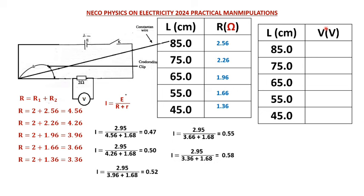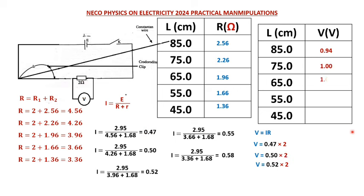For the voltmeter reading in Part 2, the voltmeter is connected across the 2Ω resistor only, so we multiply the current by 2Ω to get the voltage: V = I × 2. We repeat this for each corresponding current value to obtain all the voltmeter readings. That concludes Part 2.